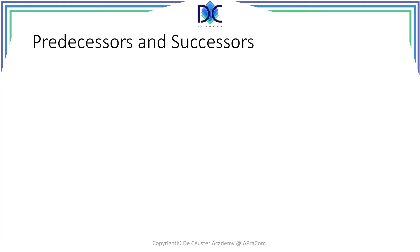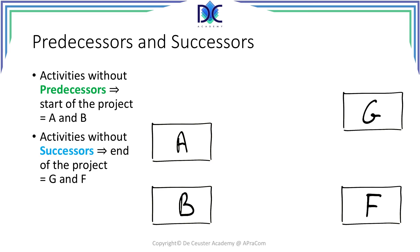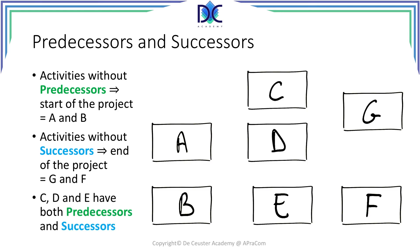Let's look a little bit closer at predecessors and successors. Let's consider two activities A and B that have no predecessors — it means that A and B can be at the beginning of the project. On the other hand we can identify activities that have no successors, like tasks G and F. We also have intermediate activities like C, D, and E, and these activities have predecessors and successors. What we now have to do is link those different activities by looking at the precedences of tasks C, D, E, G, and F.